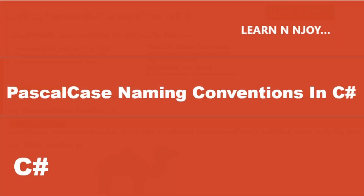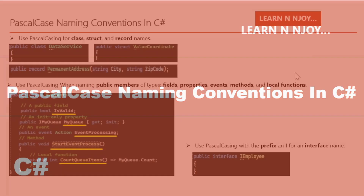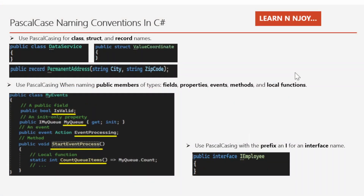Pascal case naming convention in C#. Use case number one: use Pascal casing for class, struct, and record names. For example, 'public class DataService' — DataService is written in Pascal case. Similarly for a struct, 'ValueCoordinate' — V and C are both capitalized. And for a record, 'PermanentAddress' — P and A are capitalized.